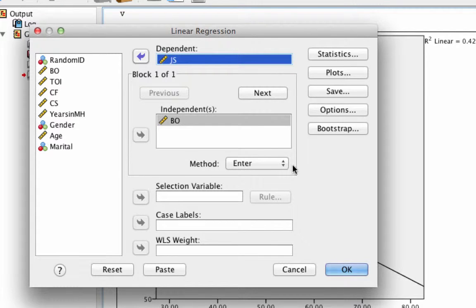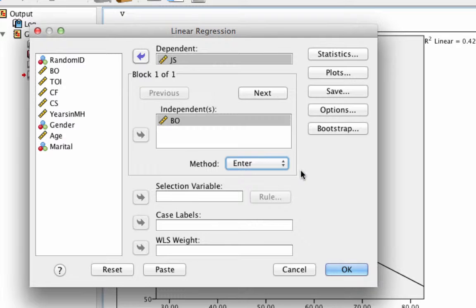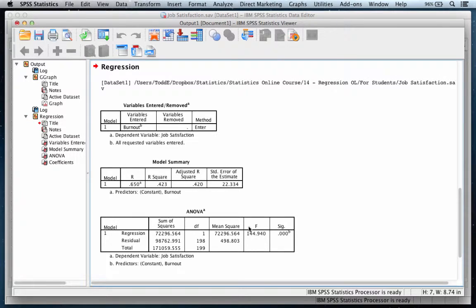Now there are several things to note about this box. The first is that there are multiple methods of entry for these data. By default, the setting is enter, but we could choose others. Stepwise, remove, backward, forward. The only one that you should be very reluctant to use is stepwise, because of the mathematics behind it. I'll do another video explaining the errors of stepwise regression. For now, just use the default entry or the default method which is enter. Let's not do anything else. Let's just simply click OK and take a look at the output that we get.